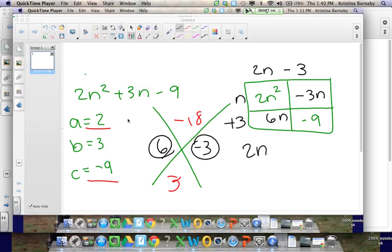Therefore, we have 2n minus 3, n plus 3. And you can FOIL these to check to see if your answer is correct.